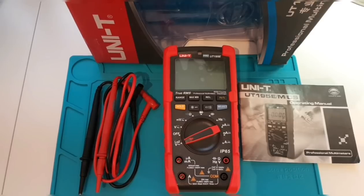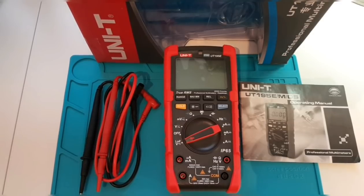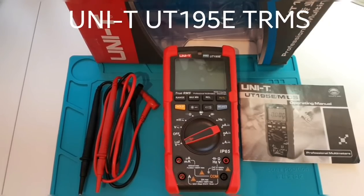In the spotlight, it's the Unity UT195E Pro, a true RMS 6,000 count multimeter.